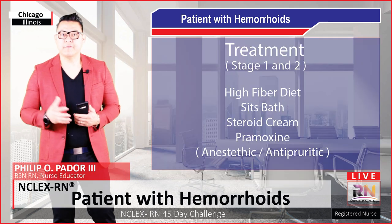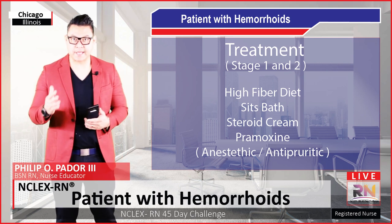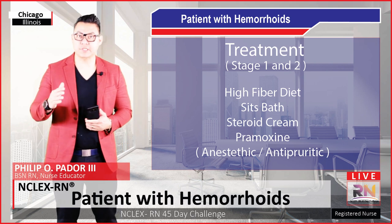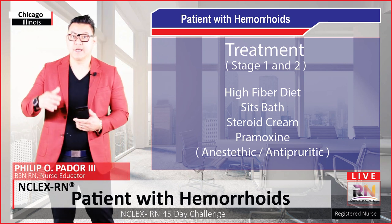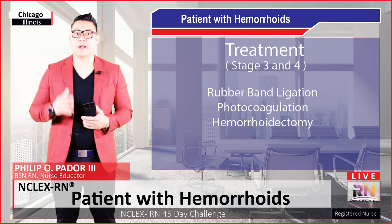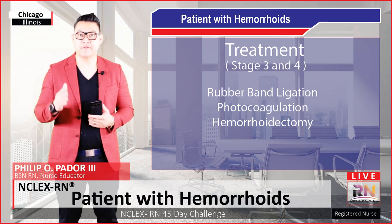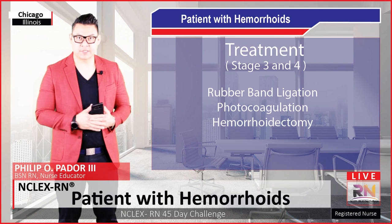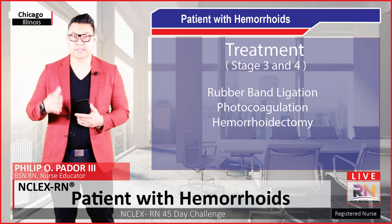Treatment for stage 1 and 2 internal hemorrhoids consists of a high fiber diet, a sitz bath — which is a warm shallow bath that cleanses the perineum, the space between the rectum and the genital area — and steroid cream. Pramoxine can also be used; pramoxine is an anesthetic and anti-pruritic agent, meaning anti-itching. For stage 3 and 4, rubber band ligation can be done, which is a procedure in which the hemorrhoid is tied off at its base with a rubber band to cut off the blood supply. Other options include photocoagulation, where infrared light is used to break down the hemorrhoid, and hemorrhoidectomy, which is essentially cutting them out.